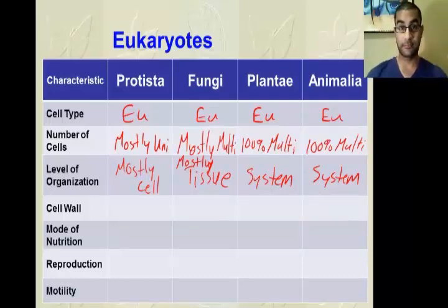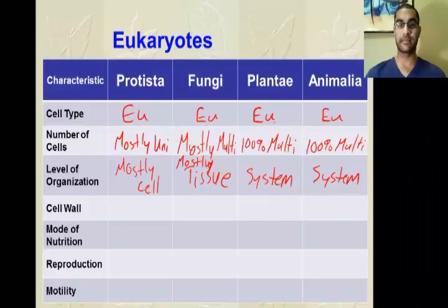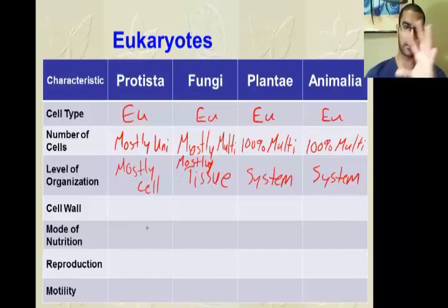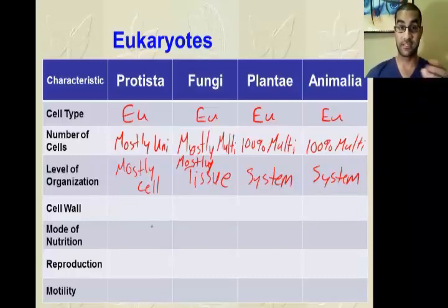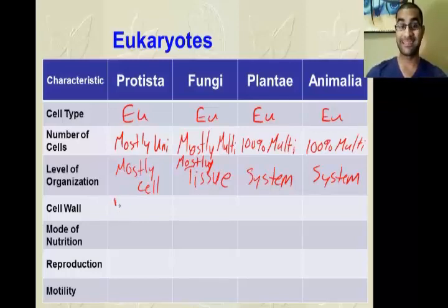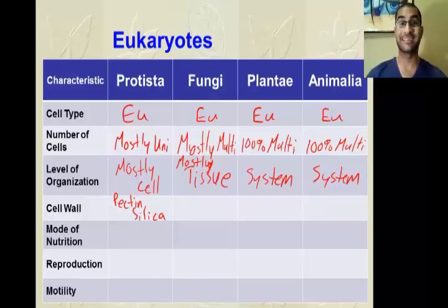For cell walls: Bacteria have peptidoglycan; Archaea have uncommon lipids. Protista is a kingdom where if it's eukaryotic but you can't distinctly say it's Fungi, Plantae, or Animalia, it probably falls here. Within Protista you find fungus-like protists, plant-like protists, and animal-like protists — lots of variety. If you hear a reference to pectin — P-E-C-T-I-N — or silica, that's specific to kingdom Protista. You may also hear cellulose with Protista, so don't automatically assume cellulose means Plantae.